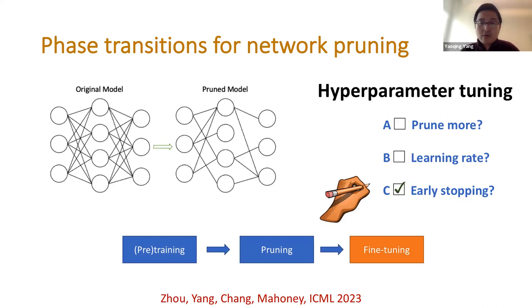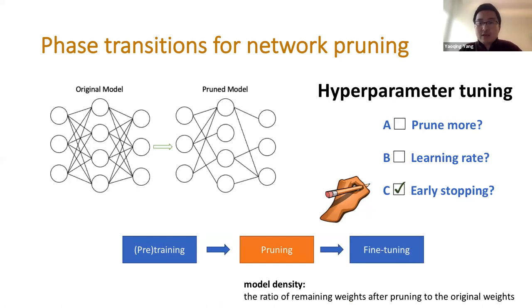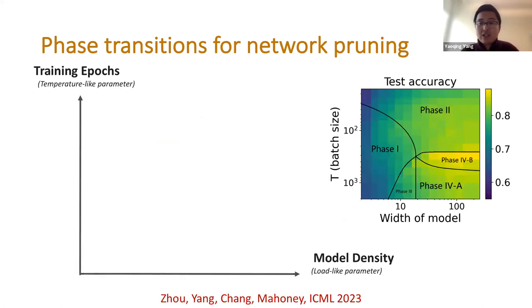With three stages, each with its own hyperparameters, our question is: can we characterize phase transitions for these hyperparameters? We use the term model density to describe the size of the pruned model — the ratio of remaining weights to original weights. There is a clear connection between this problem and our phase plot: model density is related to the load parameter on the x-axis, while the temperature parameter on the y-axis relates to training noise.